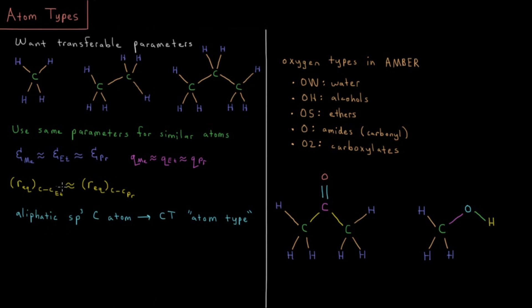So what we might want to do to encapsulate all of this information is define some aliphatic, aliphatic just meaning alkyl, some alkyl sp3 carbon atom type which in AMBER is defined as CT, capital C, capital T.